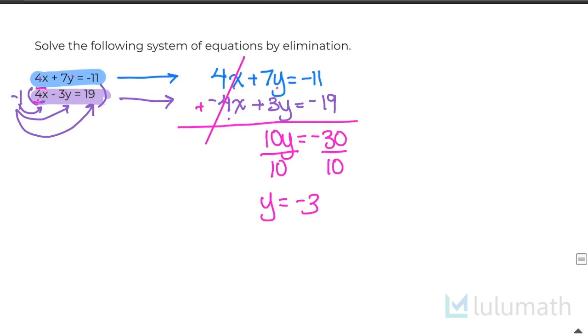Now that I've done that, I can just solve for x. So again, I can choose either equation. I will use the top one. 4x plus 7y equals negative 11.